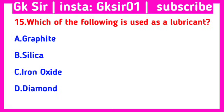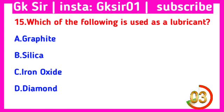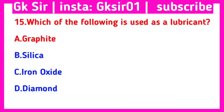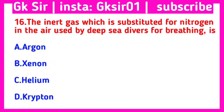Question number 15. Which of the following is used as a lubricant? Option A: graphite, Option B: silica, Option C: iron oxide, Option D: diamond. The correct answer is Option A: graphite.